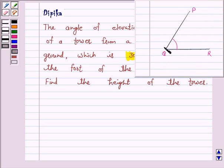When PQ is a line of sight, the line of sight is a line drawn from the eye of an observer to the point viewed by the observer.